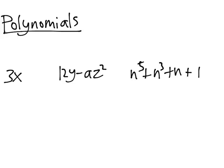Notice that 3x doesn't have any addition or subtraction, so it's just a monomial. Now, 12y minus az squared has two different terms which are subtracted, so this is a binomial.